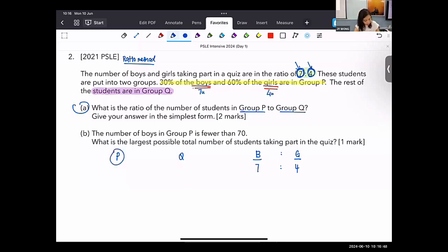They only told us about P. What did they tell us about P? They told us that 30% of the boys. So 30% of 7 units, right? What is it? 30 out of 100 times 7. Branching is also possible. Ratio method, branching, or model is also possible. So let me just show you first. 2.1 units. Then for the girls, this is the boys, the girls will be 60% of four, which is 60 out of 100 times 4. You will get 2.4 units.